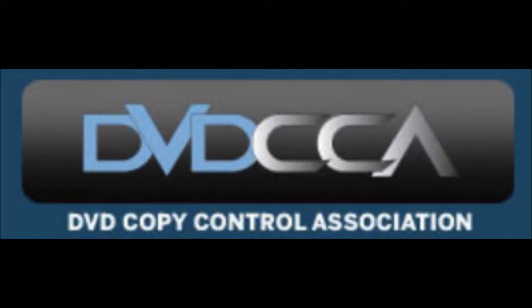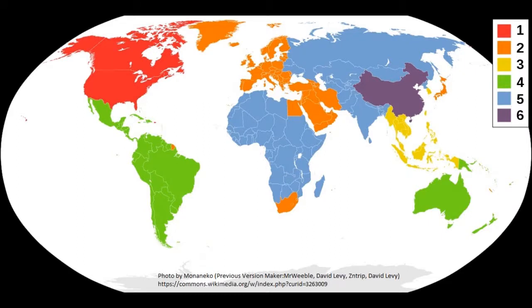The DVD Copy Control Association required manufacturers to set their DVD player's region playback control, or RPC, according to the region the unit will be sold. That DVD player will only play discs from that specific region. For example, if I were to take a Region 1 DVD to Europe and try to play it, their DVD player would refuse to play the disc, and vice versa.